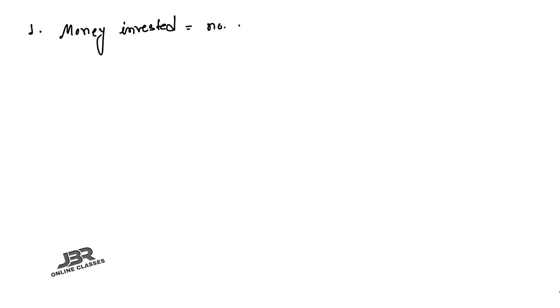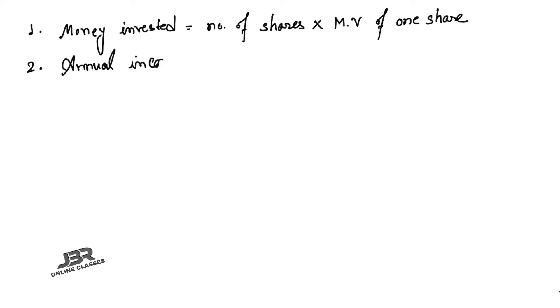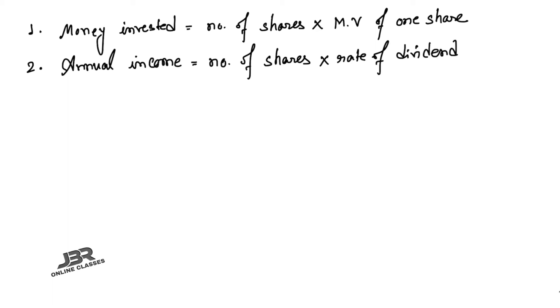Now let's discuss the formulas. Formula one: money invested equals number of shares multiplied by MV, that is the market value of one share. Formula two: annual income equals number of shares multiplied by rate of dividend multiplied by face value (nominal value) of one share.